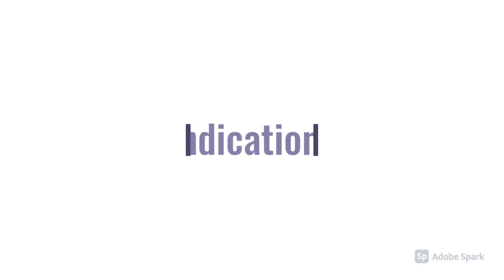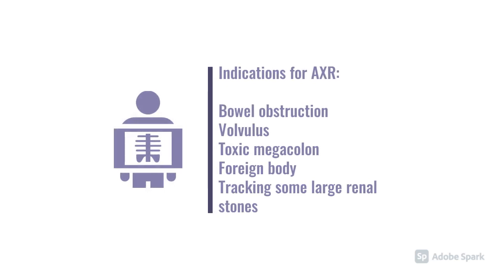Before we look at pathology, we should probably look at indications for abdominal x-ray. The indications are mainly related to bowel and bowel dysfunction. Most notably, obstruction is probably the most common reason we request abdominal x-rays. Volvulus is a type of bowel obstruction, toxic megacolon you see in lots of colitis and things. Foreign bodies — that might be ingested or rectal foreign bodies. And you can use it for some large kidney stones as well, although that is quite uncommon.